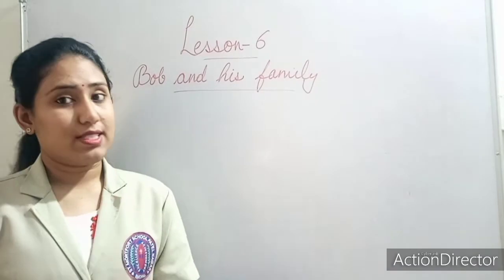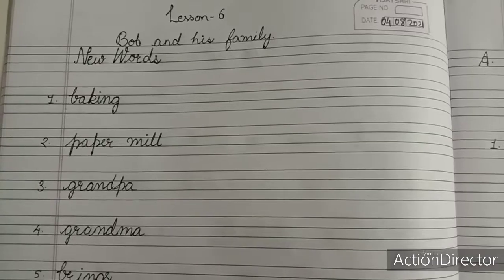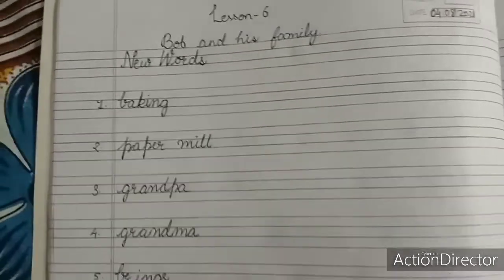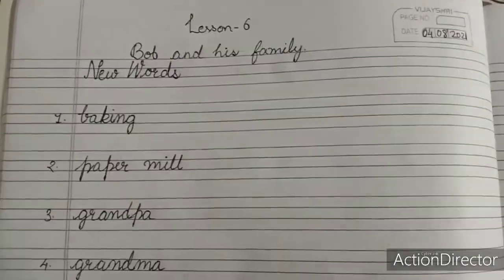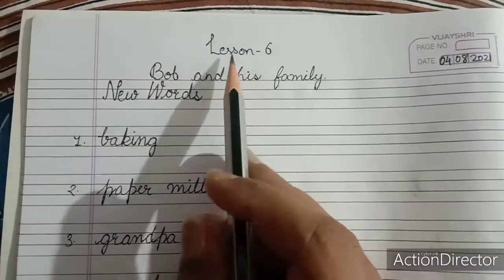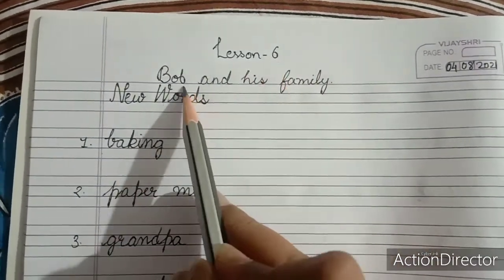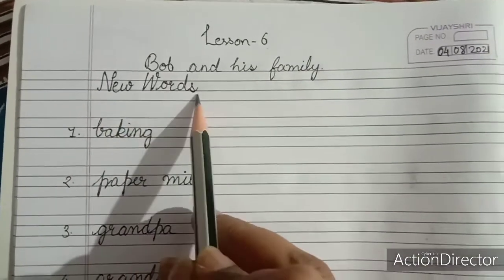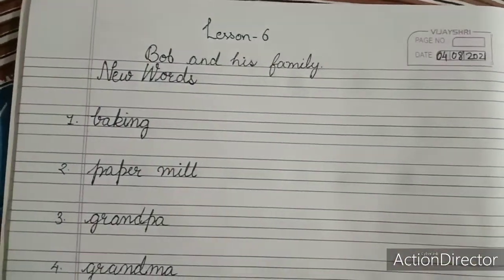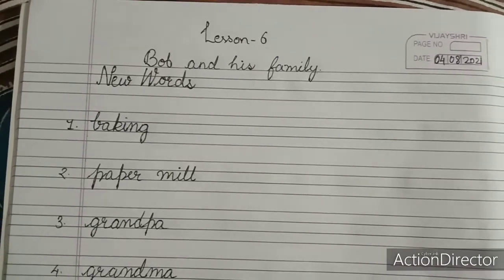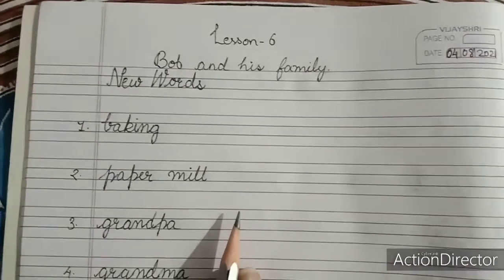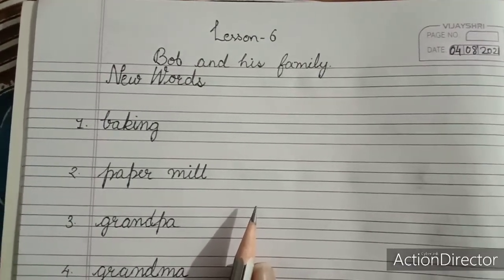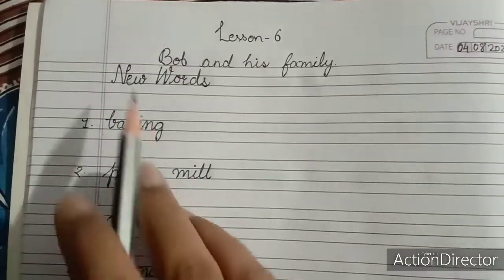So let's write down the difficult words now. Here like this you have to write. As I have shown, lesson 6 first you have to put the heading lesson 6 Bob and his family. After that next heading will be new words. So like in previous lesson, the same way you have to do in this lesson also. This lesson we are going to start copy work with difficult words.